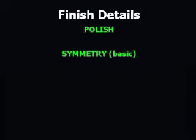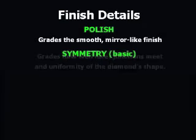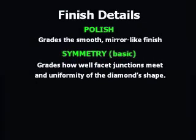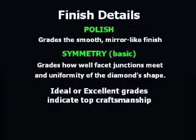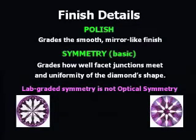The final details of a diamond's cut are graded separately from performance and proportions. The polish grade reflects the smoothness and mirror-like finish of the facets. The symmetry grade judges how well facet junctions meet and evaluates uniformity of the diamond's shape. As with cut, ideal or excellent grades indicate top craftsmanship. Note that lab-graded symmetry is not the same as optical symmetry, which is discussed in our A Cut Above tutorial.